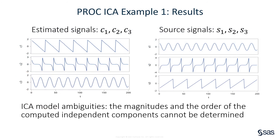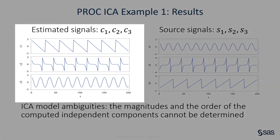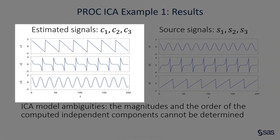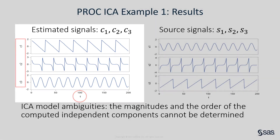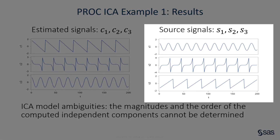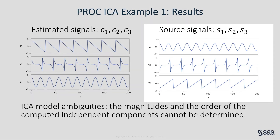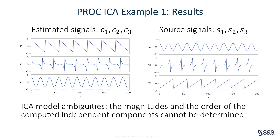Now, let's look at the plots of the computed independent components c1, c2, and c3. In the figure on the left, the plots are generated by using the scores1 output data table and PROC SGrender. In each plot, the horizontal axis displays the time index, and the vertical axis displays the value of a computed independent component. The figure on the right shows the original source signals s1, s2, and s3. Comparing the two figures, you can see that the original source signals are accurately estimated by the computed independent components, up to multiplicative signed scalars.